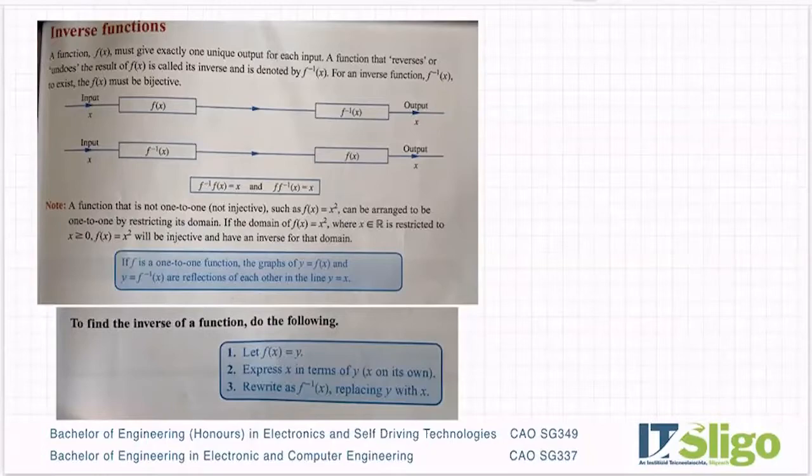A function f(x) must give exactly one unique output for each input. That is the definition of a function - you must have one unique output for each input.